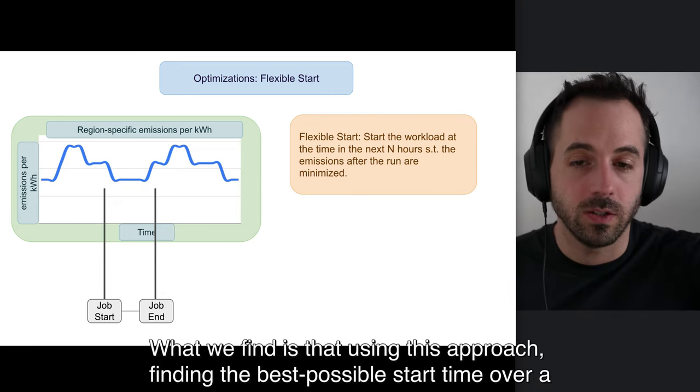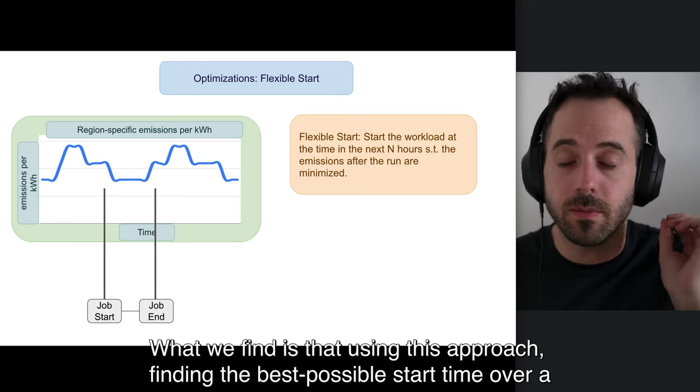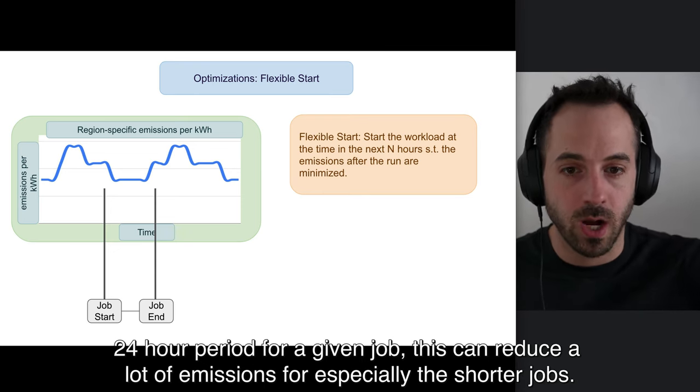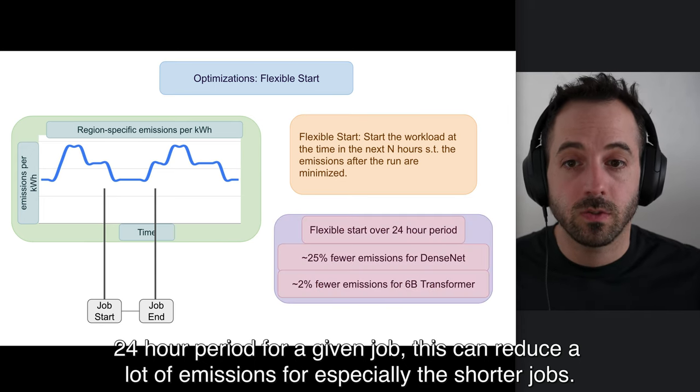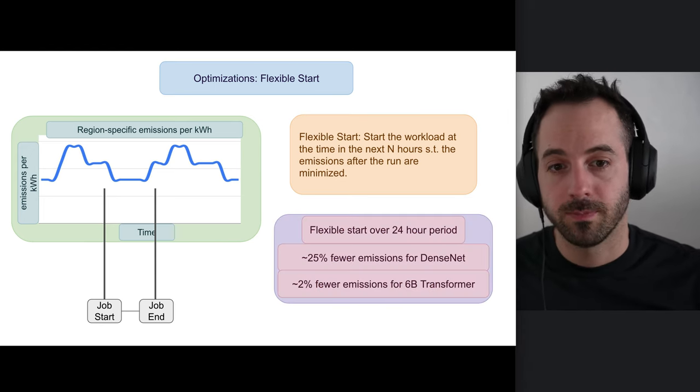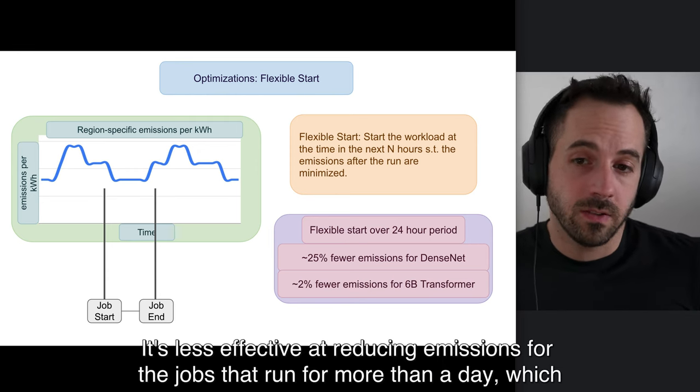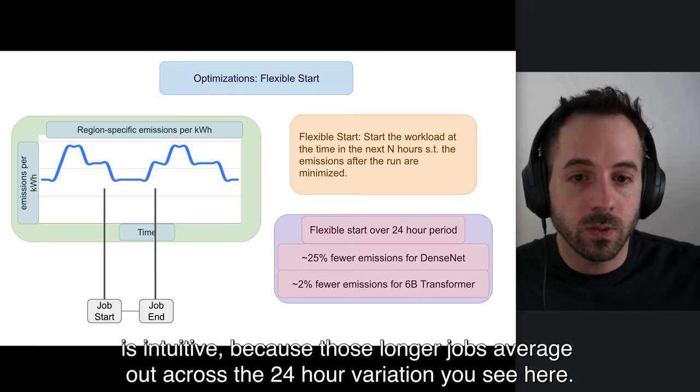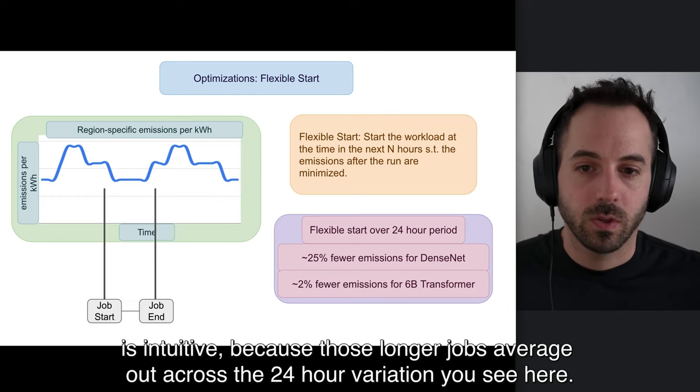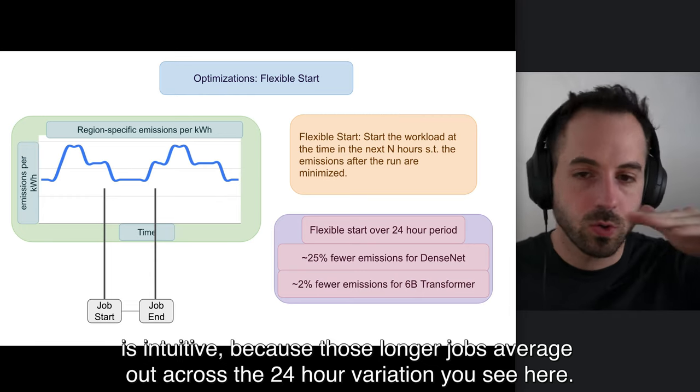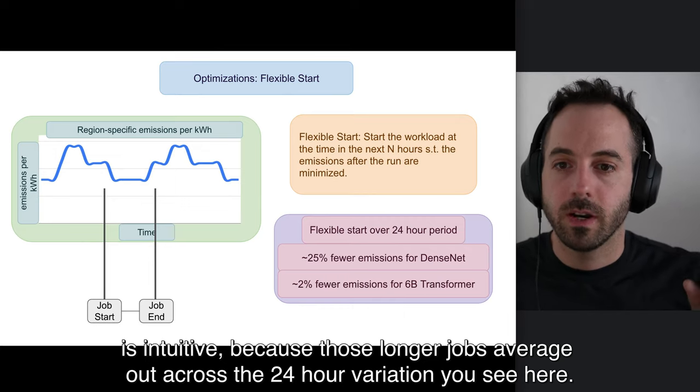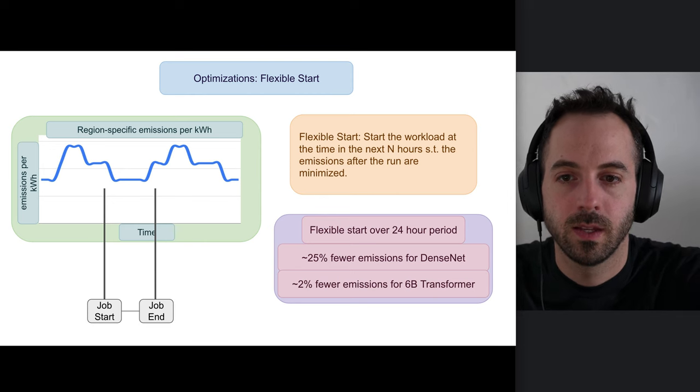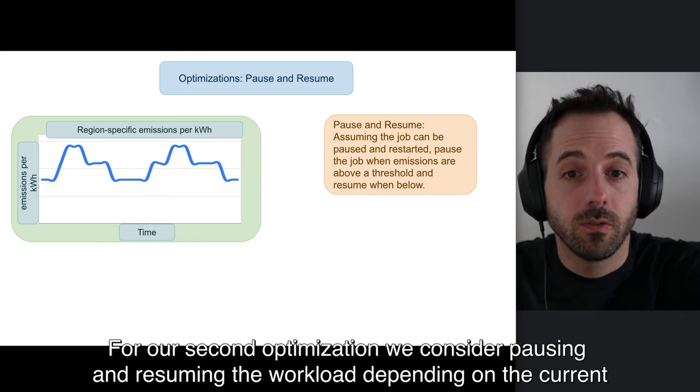What we find is that using this approach, finding the best possible start time over a 24-hour period for a given job, this can reduce a lot of emissions for especially the shorter jobs. It's less effective at reducing emissions for the jobs that run for more than a day, which is intuitive because those longer jobs average out the 24-hour variation that you see anyway.